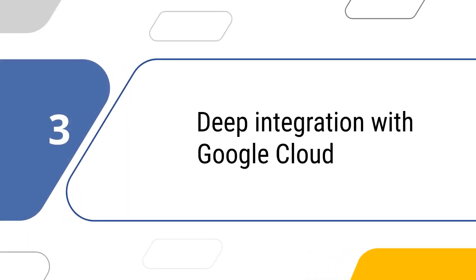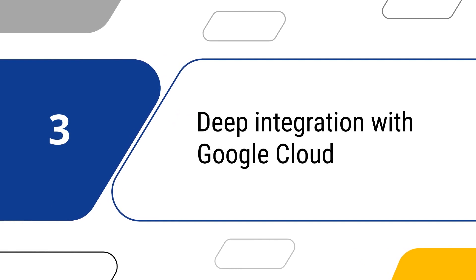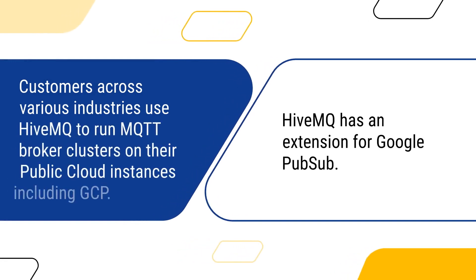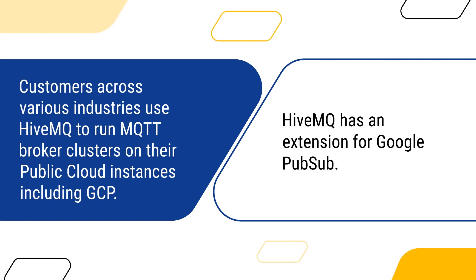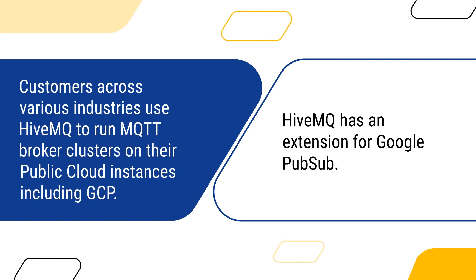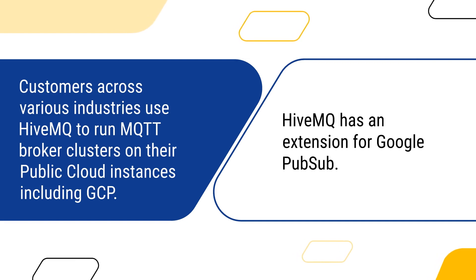Number three is deep integration with Google Cloud. Enterprises ranging from large automotive manufacturers to some of the world's largest pharma companies use HiveMQ to run MQTT broker clusters on their public cloud instances, including GCP. HiveMQ's extension for Google PubSub further helps Google Cloud customers manage their IoT infrastructure seamlessly.